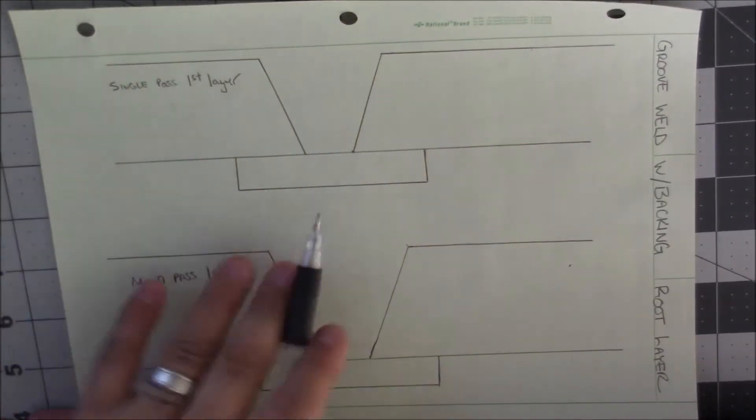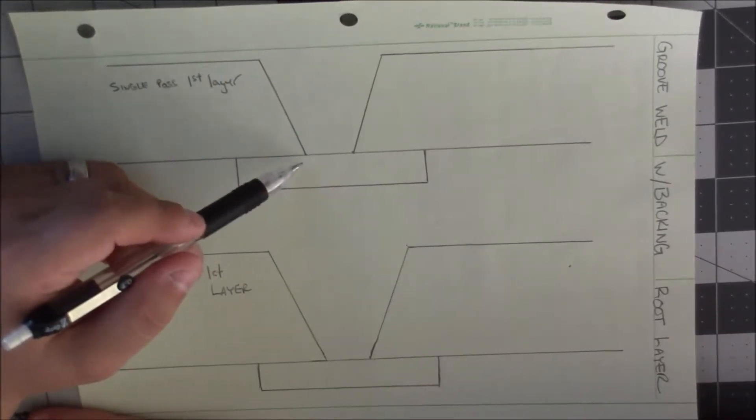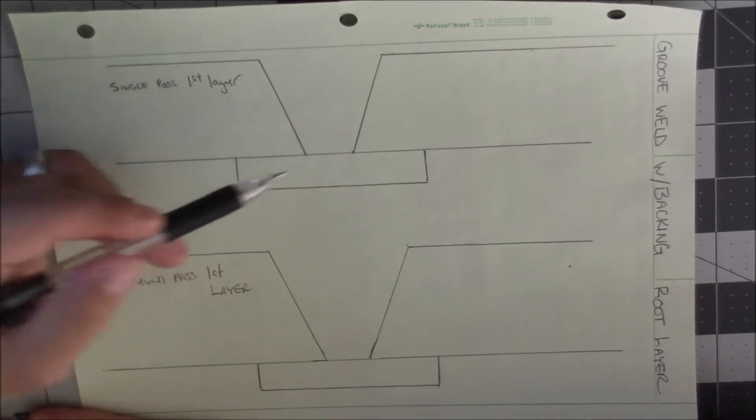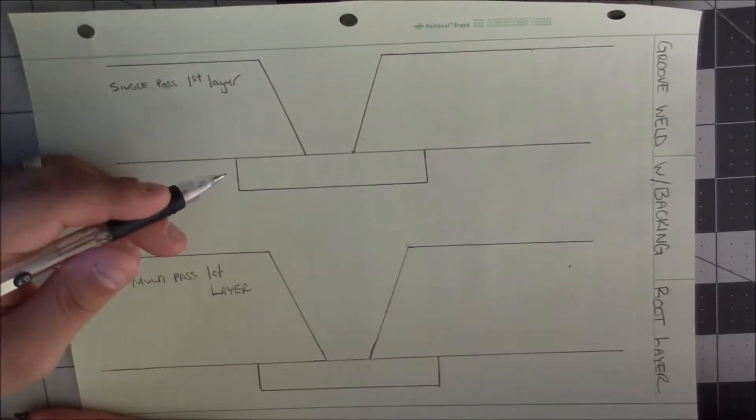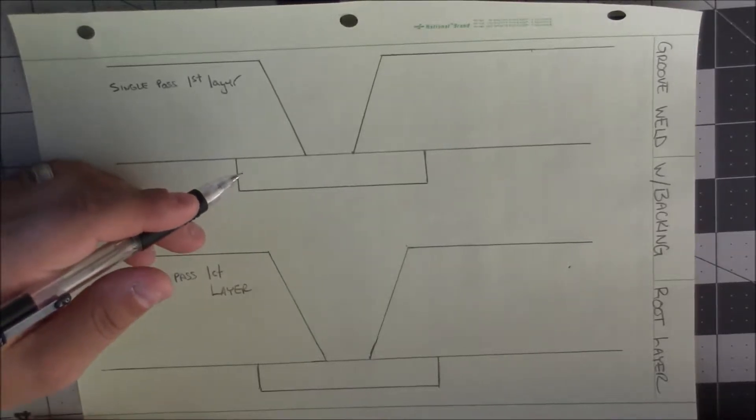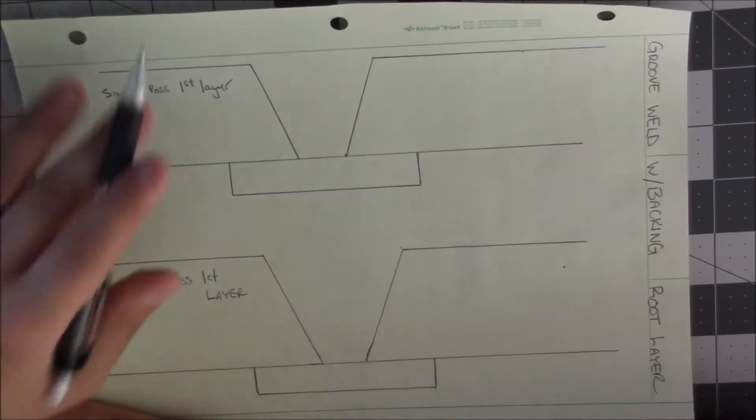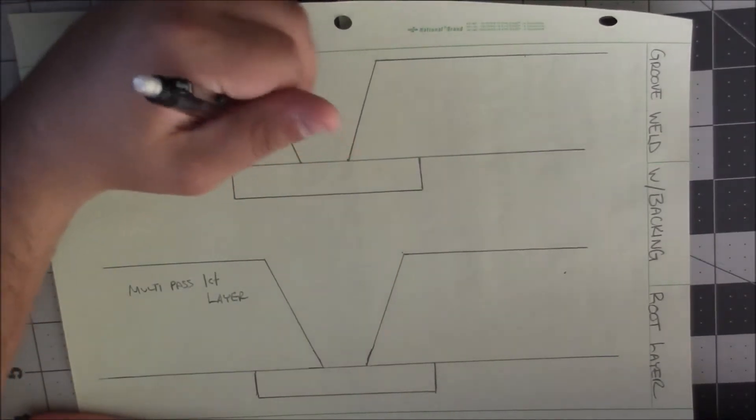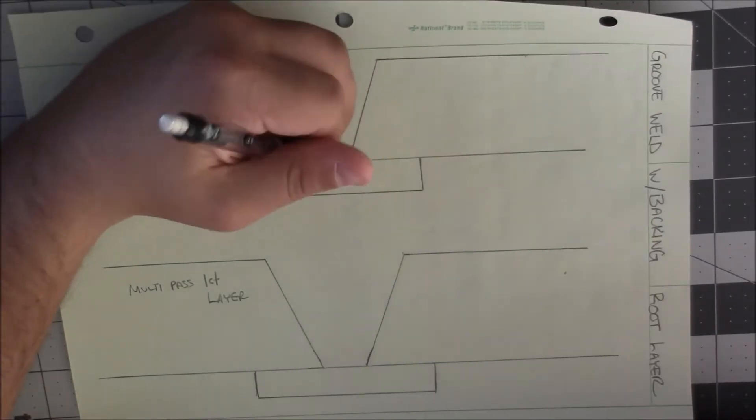What it is, sometimes when you have your fitter or whoever tacks up this joint, a lot of times this root opening is too wide and you're faced with a question: do I risk it and make it a one pass layer or a two pass layer? If you're making it a one pass layer, you're risking the chance of really hoping that you won't have fusion issues, especially if it has to pass UT or x-ray.